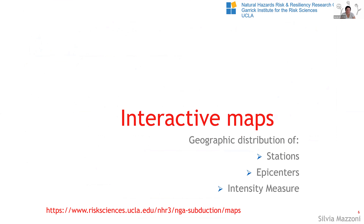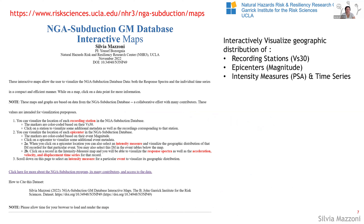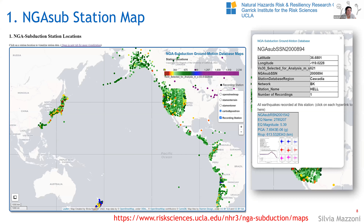The first thing I want to show you is the interactive maps. We've got a geographic distribution of stations, epicenters, as well as intensity measures. If you go to the web page at NGA-subduction/maps, there's a detailed description of the different items and instructions. The very first map you see is the station locations — all the way from northern Alaska to South America and New Zealand, with a variety of different VS-30 values. If you click on an individual station, it gives you metadata about the station and tells you how many recordings are for that station, with a hyperlink to a visualization of the spectra and time series.